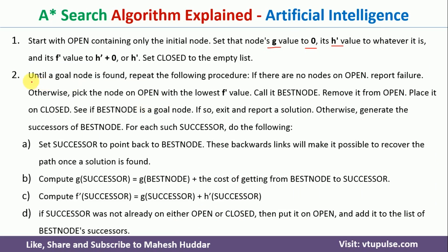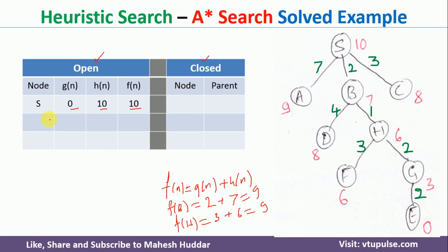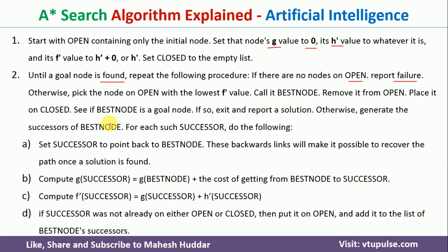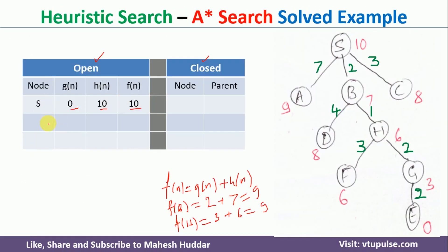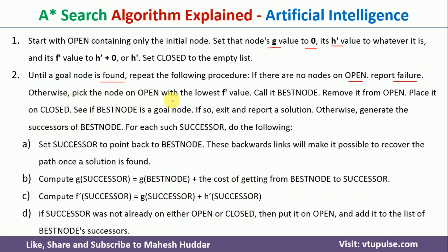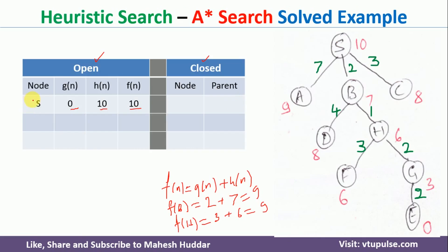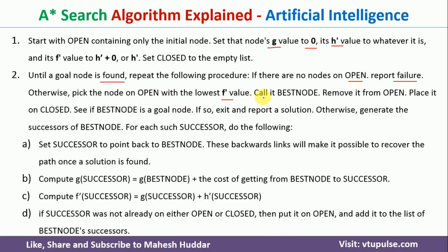Until the goal is found, we repeat the following steps. If there are no nodes in open, we report failure. Otherwise, we pick the node from open with the lowest f value. Right now only S is present, so we select S, call it the best node, remove it from open, and place it into closed.